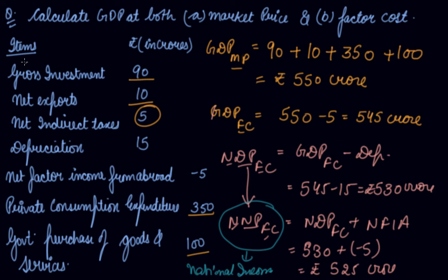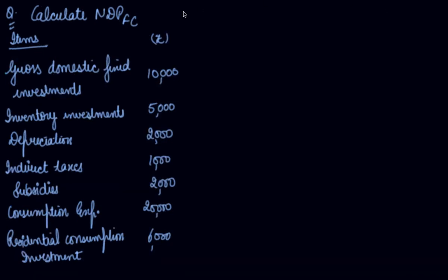These are the items through which you can use the expenditure method and calculate national income. Now in this next question using the expenditure method, you have to calculate NDP at FC. Gross domestic fixed investments are 10,000, inventory investments are 50,000, depreciation is 50,000, and direct taxes or subsidies and consumption expenditure are also given.